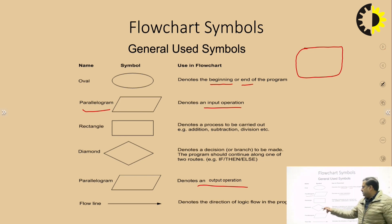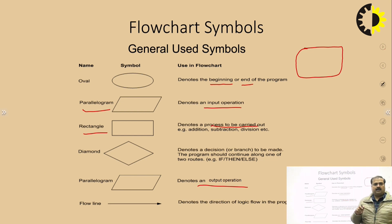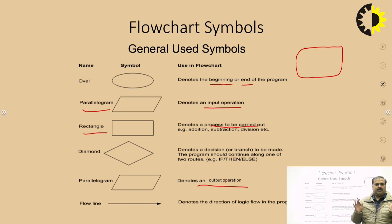Another symbol is the rectangle, which is an important symbol because it denotes the process being carried out. Whatever calculation we are performing, whatever data manipulation is being done, that is always represented in the rectangle. All computation is represented in the rectangle.